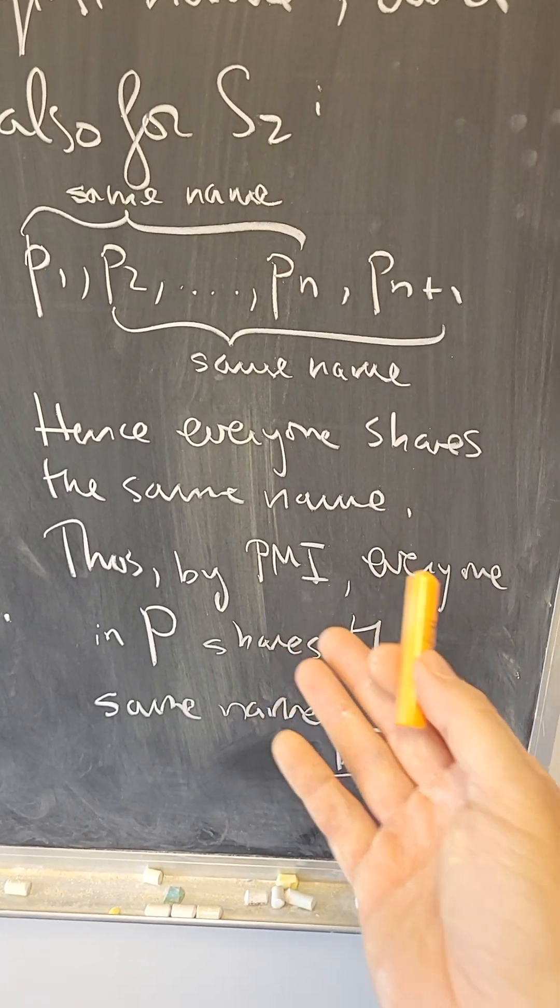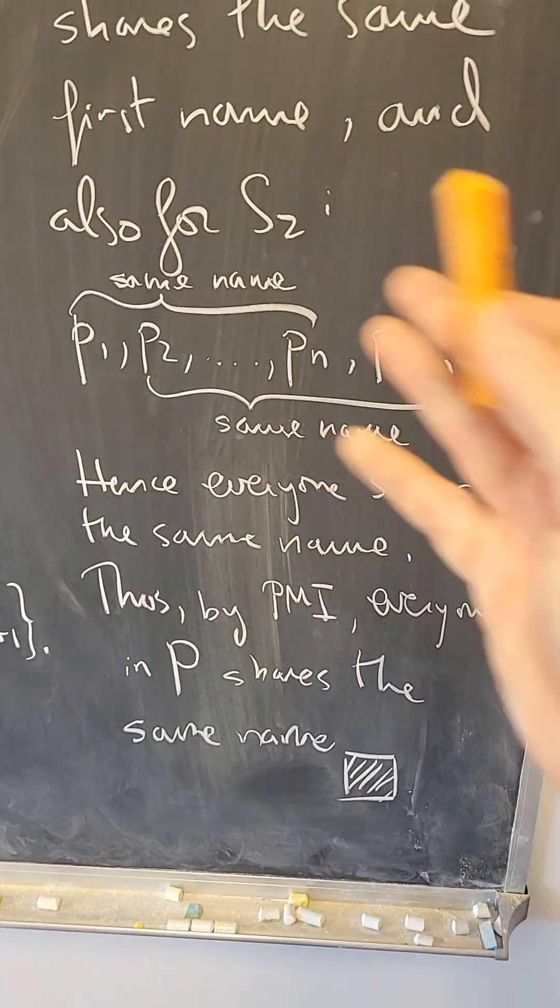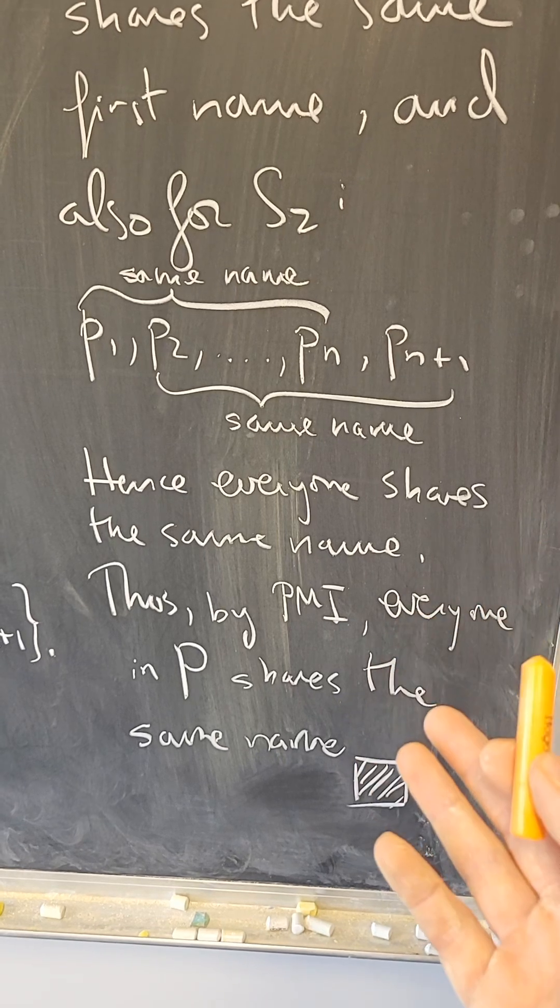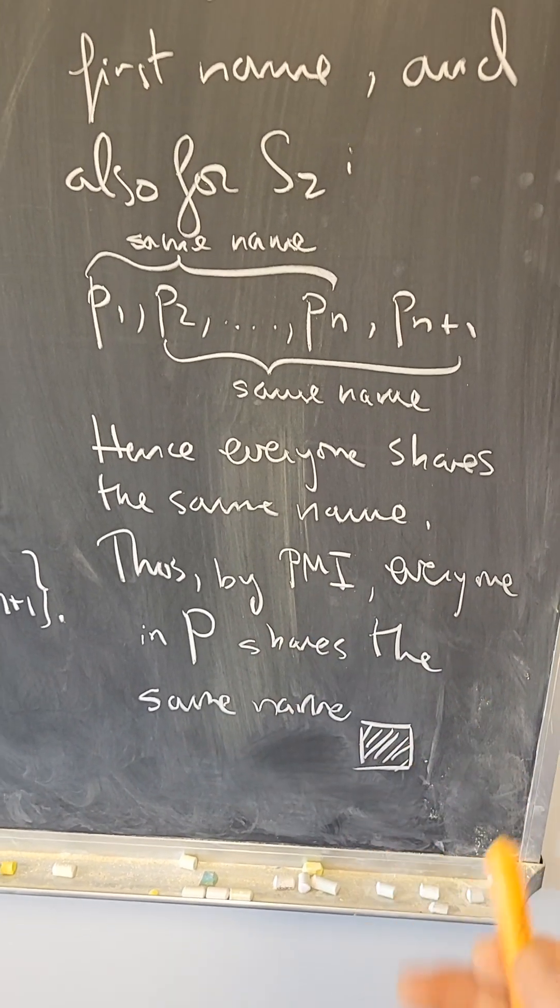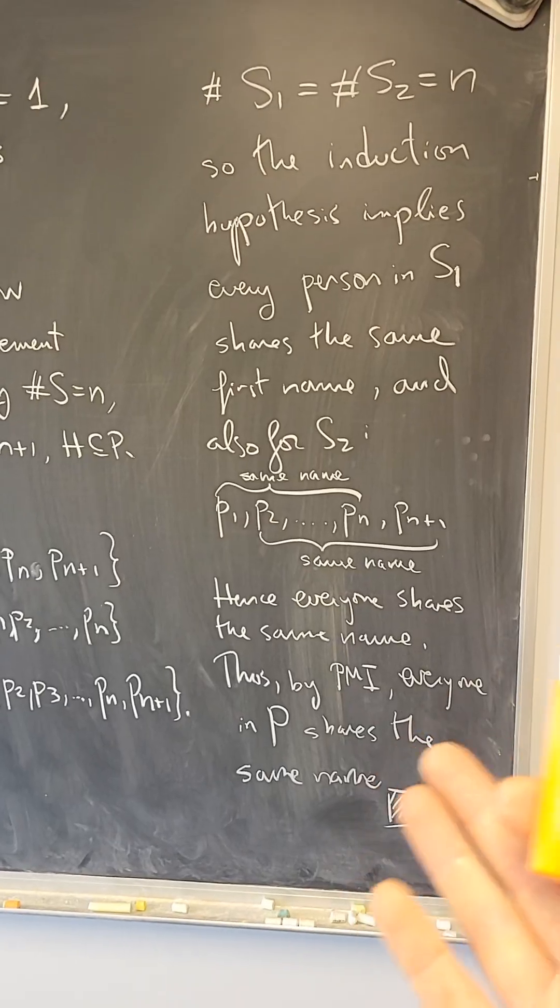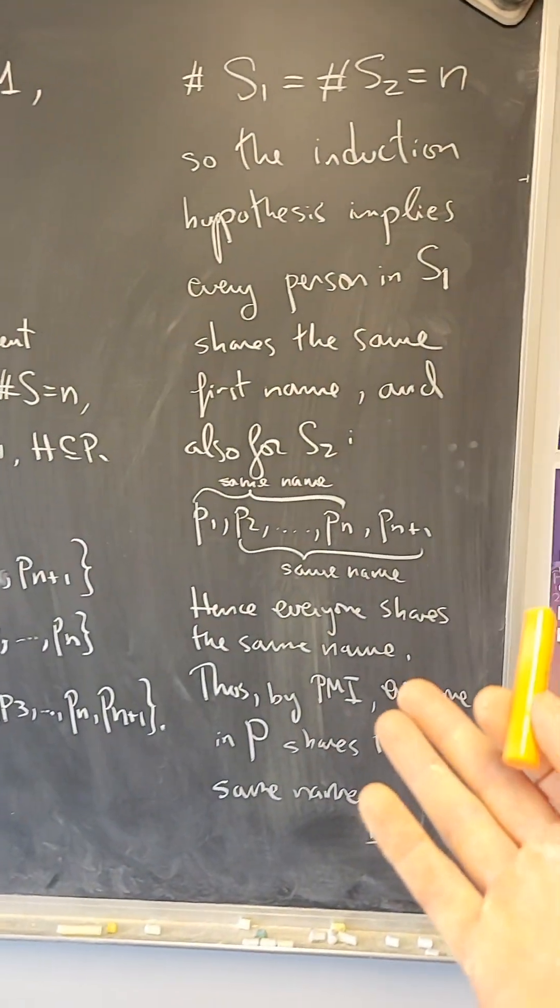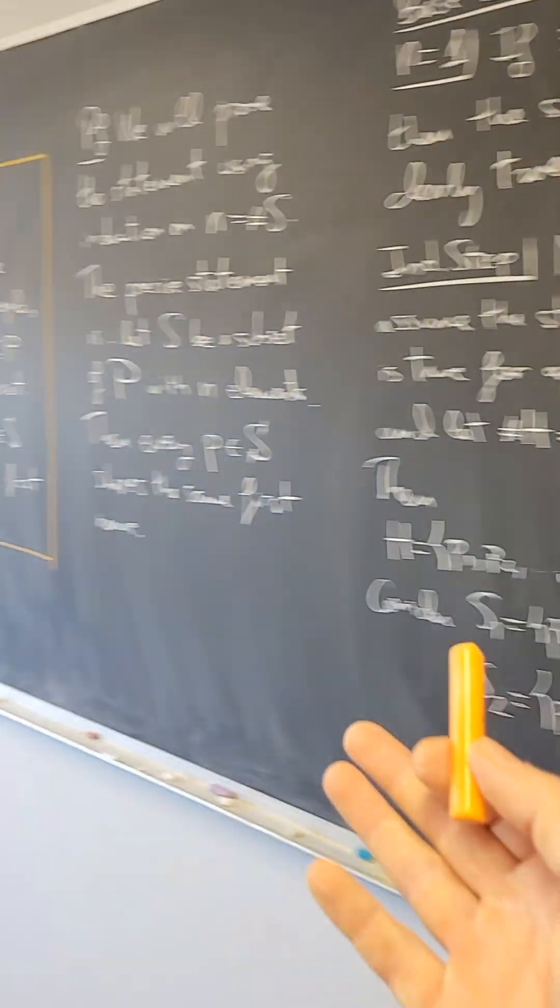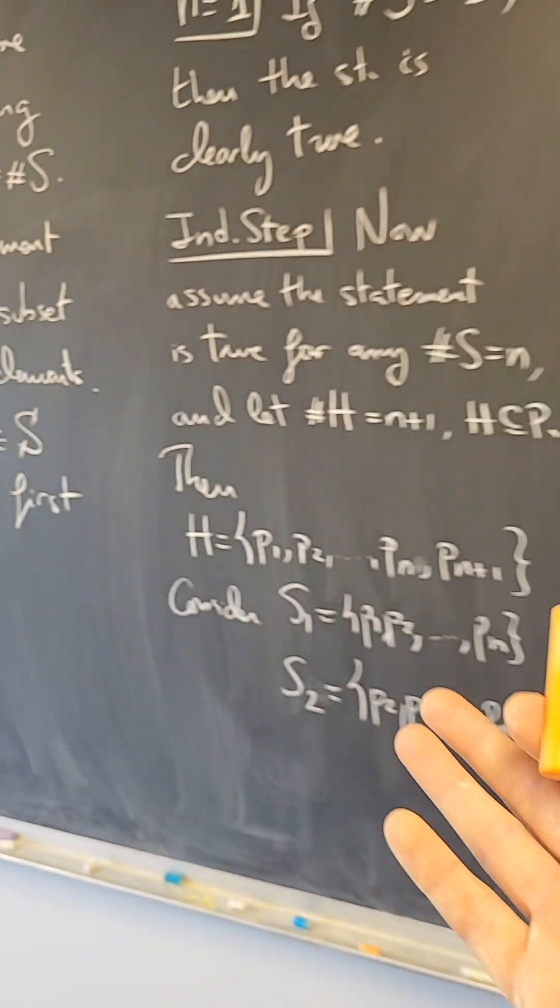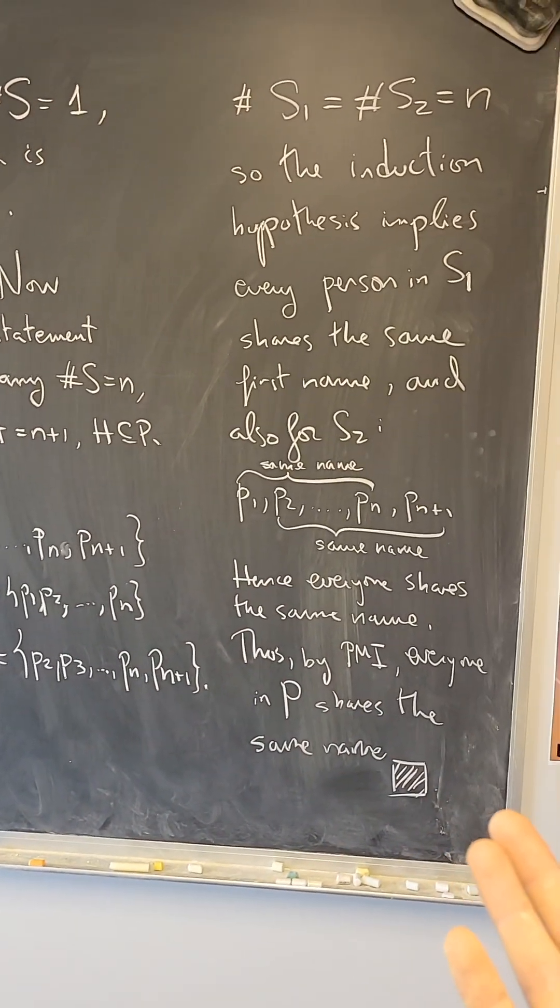And by the principle of mathematical induction, every subset of P has that property. So everyone in P shares the first name. What? No, no, this cannot be true. This looks like a legit proof by induction of that fact. But of course, you and I probably have different names.